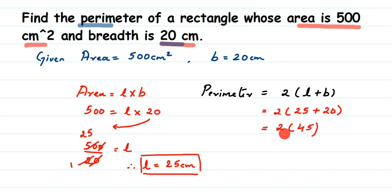2 × 45 = 90, so the perimeter is 90 centimeter. We have found the perimeter. I hope this question is clear. If you have any other question or doubt, you can drop a comment. Thank you so much for watching.